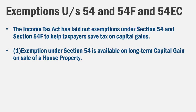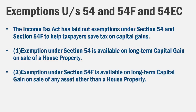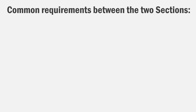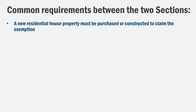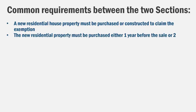Under Section 54F, if you have gains from any capital asset and you want to bring that money into a house property, you can claim exemption. The difference between 54 and 54F is that 54 applies to gains from a house property, while 54F applies to gains from any other asset reinvested into a residential house. There are two common requirements across both sections.